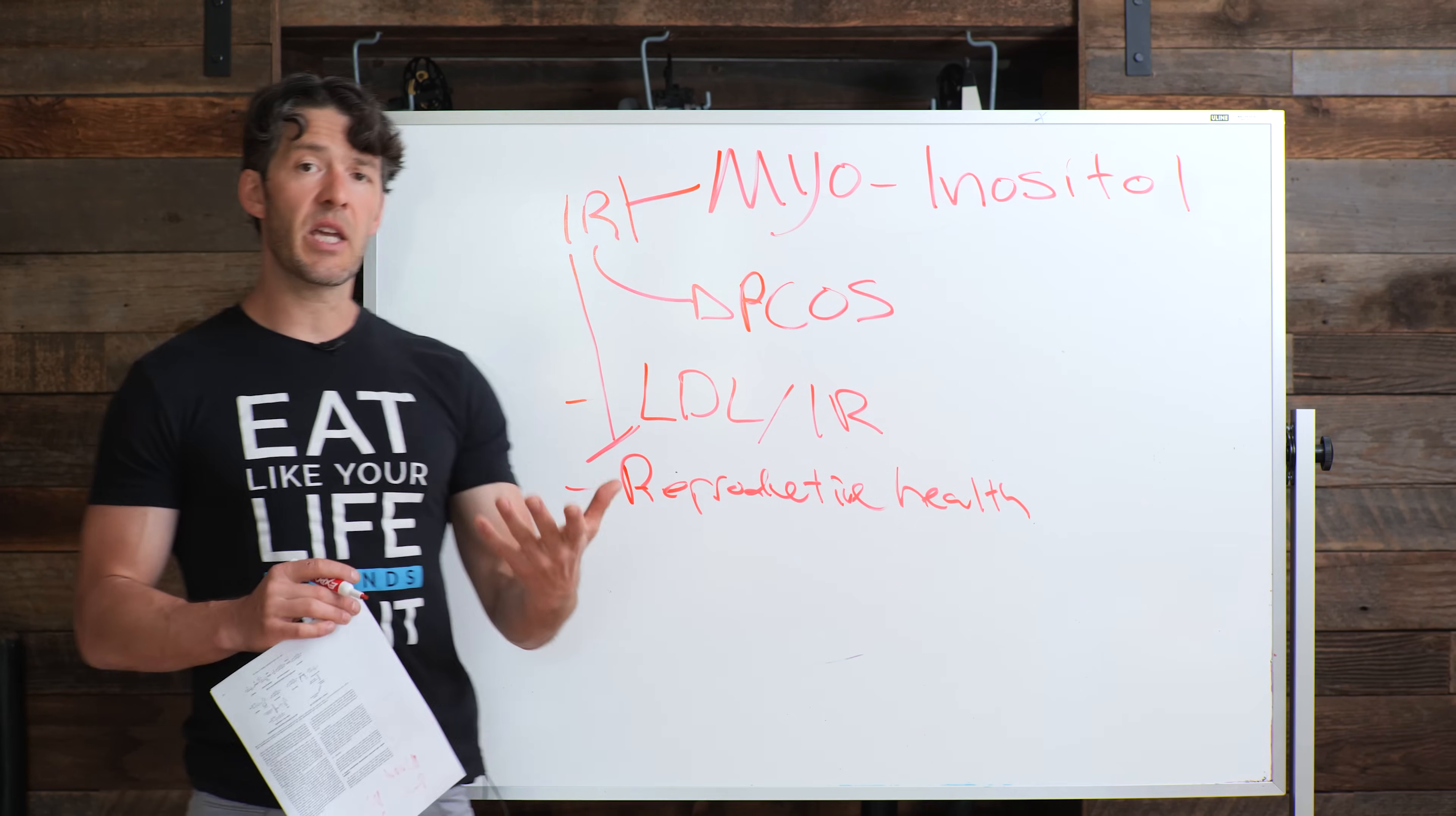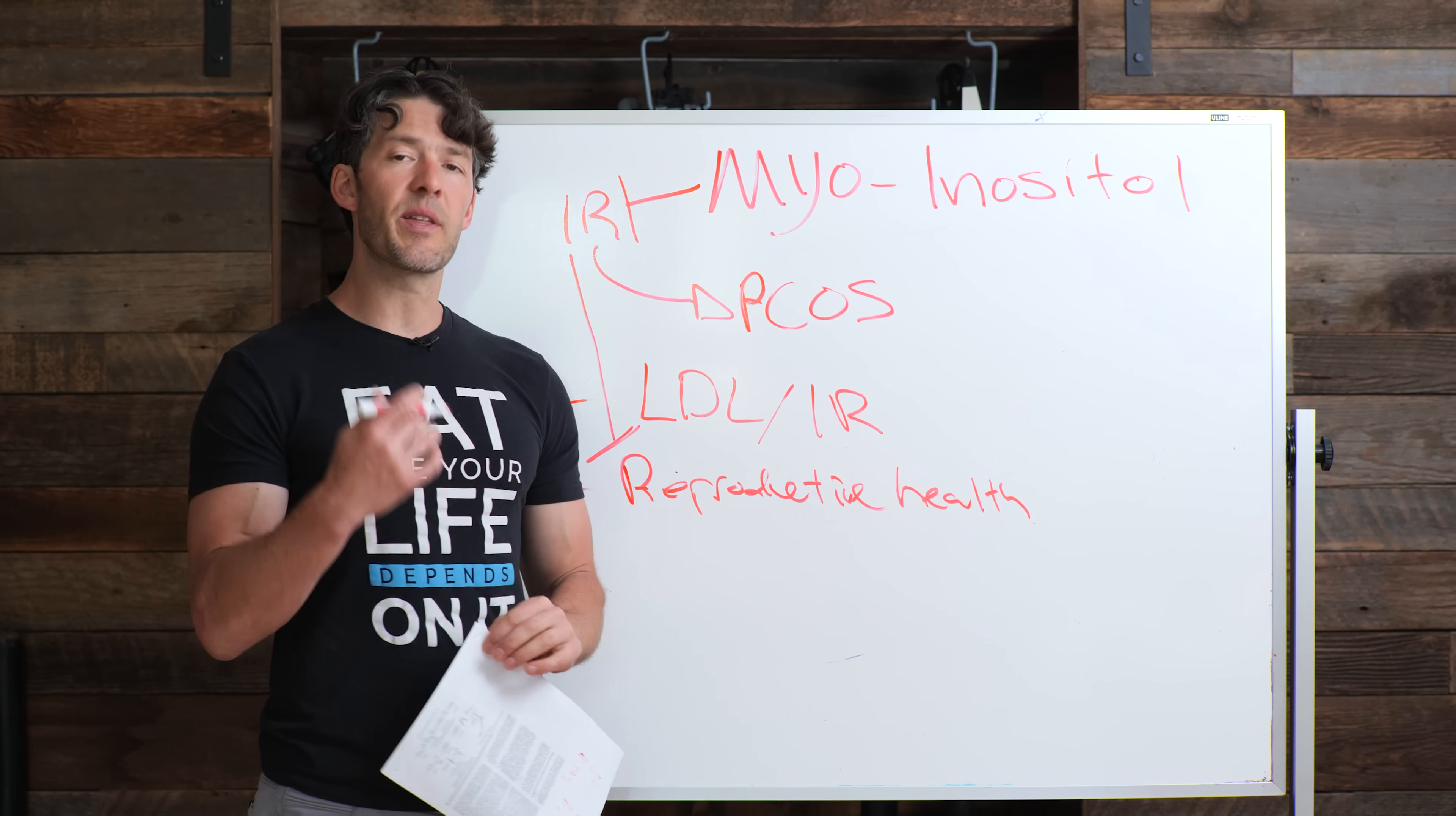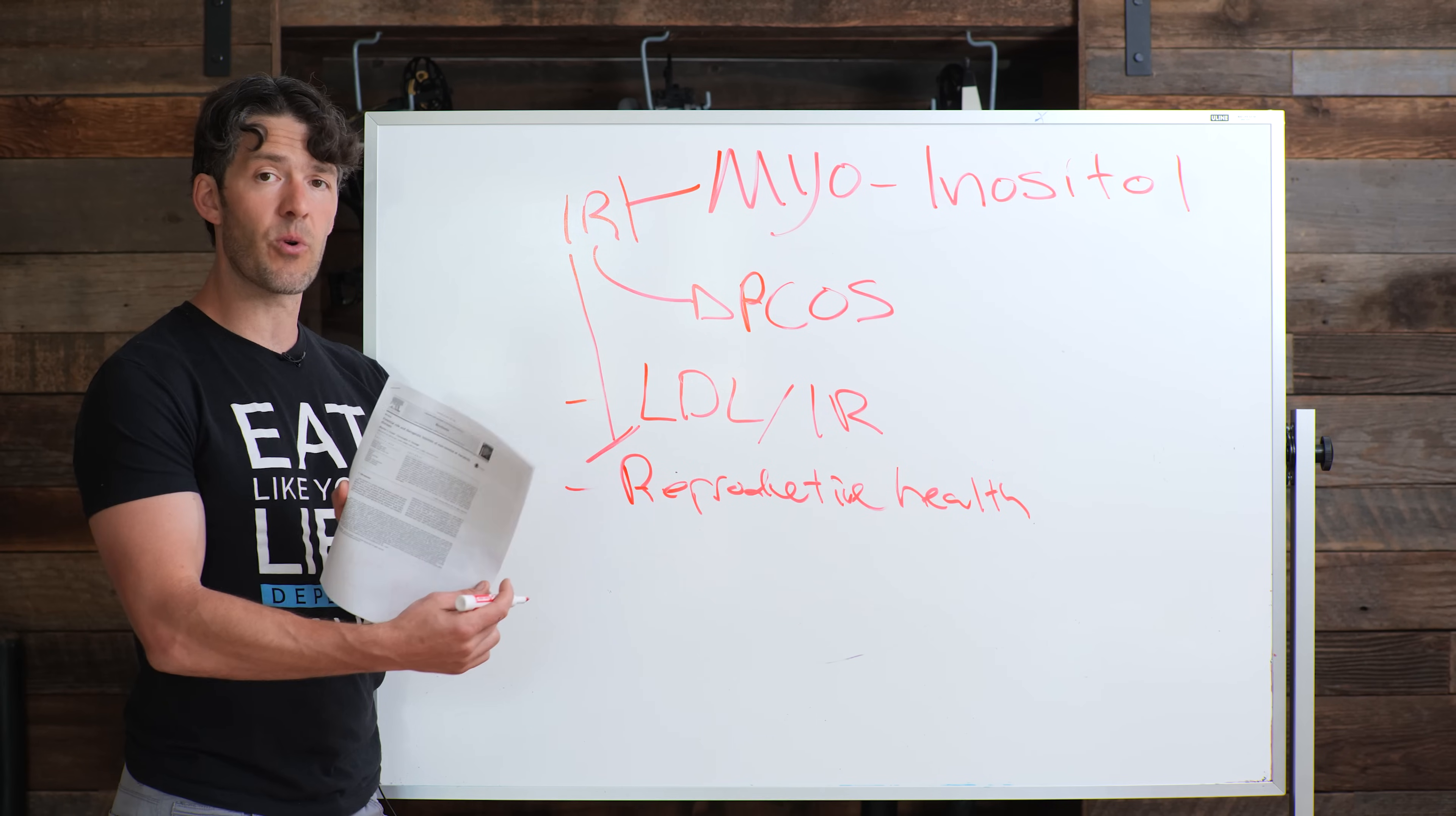But when would you want to take it from a circadian rhythm perspective? I would suggest in the afternoon, in the evening. It might be one of those things you just take when you remember. But because it can improve sleep, because it may affect neurotransmitter synthesis, it could be a little bit better to be taken in the evening. And we know that as the day goes on, insulin resistance increases from a circadian rhythm standpoint. So you're more insulin sensitive in the morning compared to in the evening time. The studies show between two and four grams per day are effective.